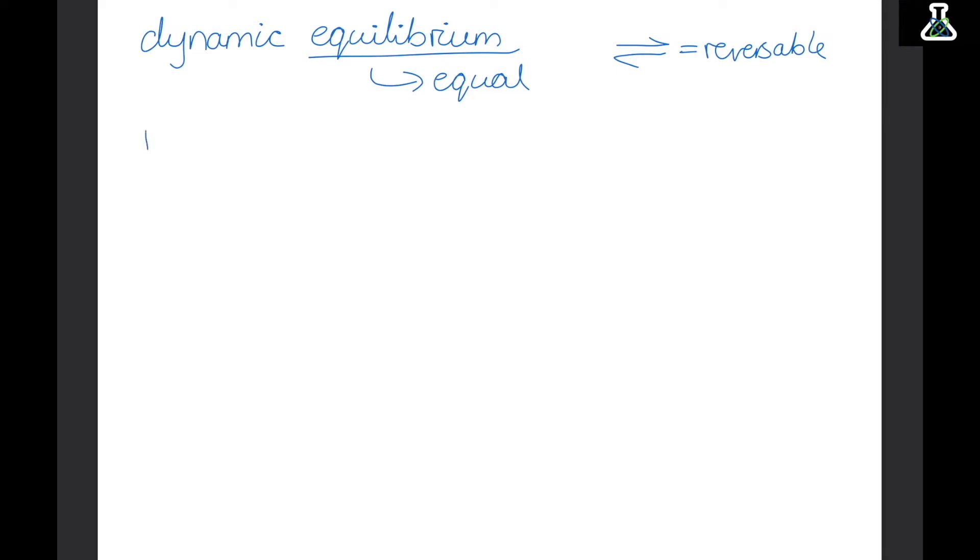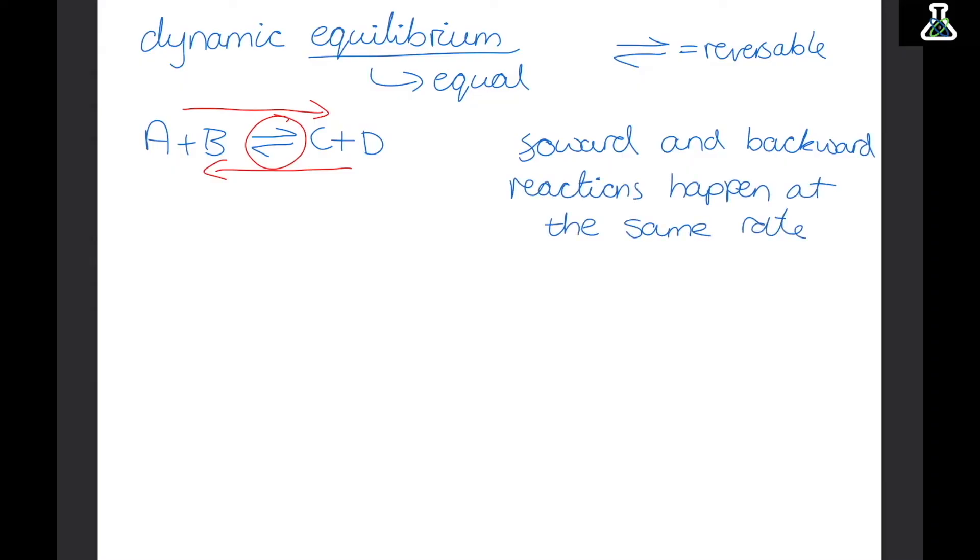So if we start with A plus B this can come together to make C and D. But this also means that C plus D can come together to make A and B. So it goes both ways. So we use this reversible sign. Now dynamic equilibrium means that these forward and backward reactions are happening at the same rate. So let's look at what this actually means.